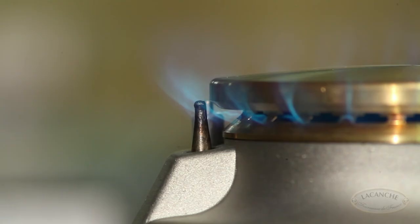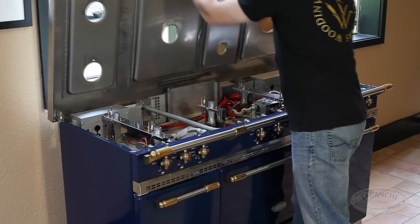The tip of the thermocouple probe should remain in contact with the flame even at the low setting. If necessary, readjust the probe and lock into place. Lower and reinstall the range top.